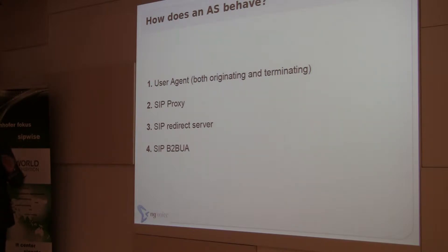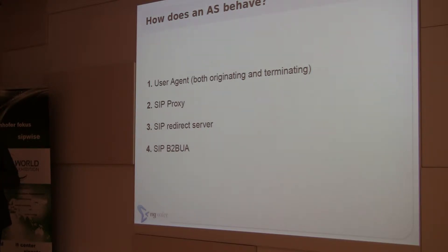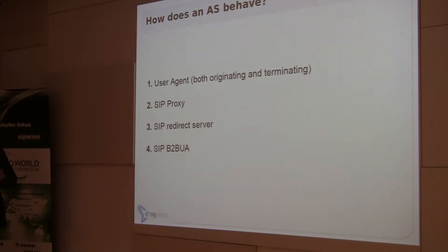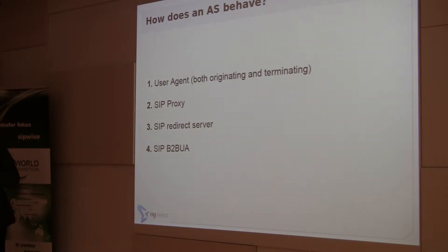So, how does an application server behave? The user agent — we have both originating and terminating — is tied to IMS naming convention. Originating means the application server will call a user in the untrusted part of the network, which is the internet. For example, it could be used to create a wake-up call application at a hotel. Terminating is the usual way, where the application server replies to the call and offers the service.